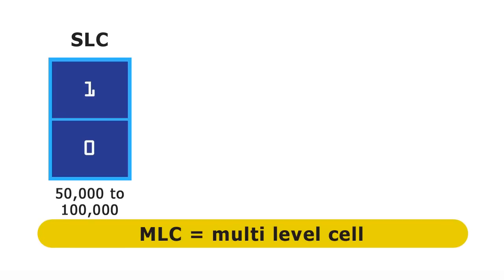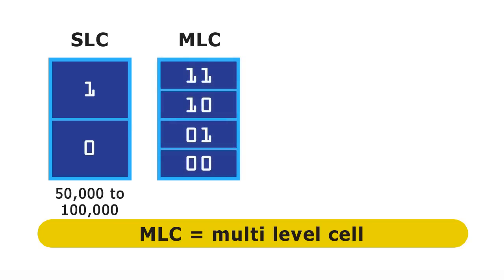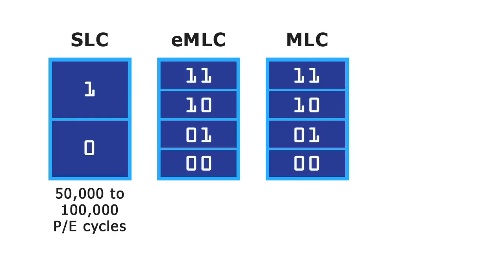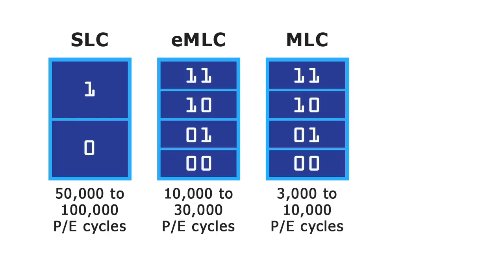Following SLC came multi-level cell or MLC, which stores two bits of data per NAND flash cell. Storing more data per cell decreases the cost of an SSD, but also decreases its writing speed and makes it wear out more rapidly. Today, MLC drives come in two variants: enterprise or EMLC, as well as end-user MLC drives. The difference between EMLC and MLC drives is not that significant, save that the enterprise drives have a lower write speed, which is gentler on the cells, so causing them to last longer. EMLC SSDs are typically rated at between 10,000 and 30,000 PE cycles, while end-user MLC drives are typically rated at between 3,000 and 10,000 cycles.